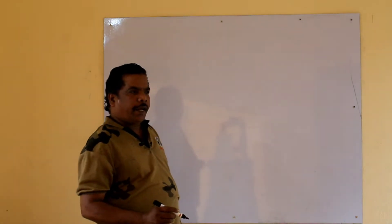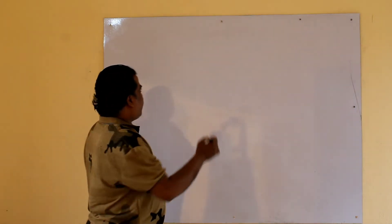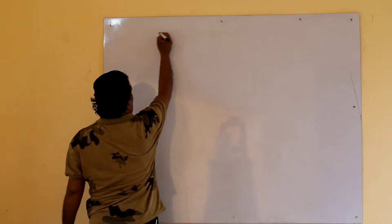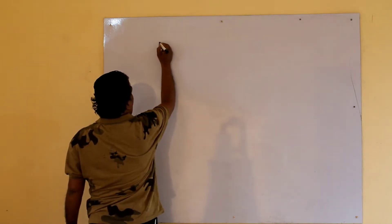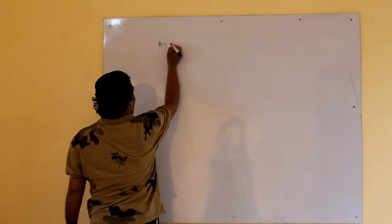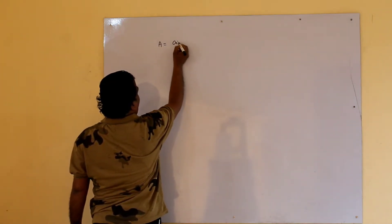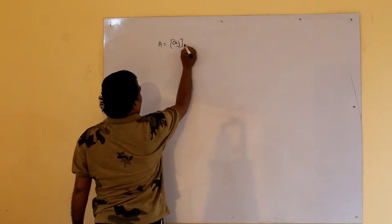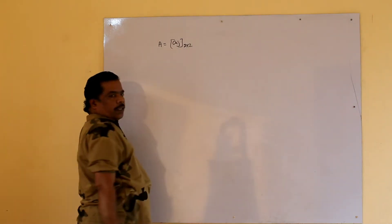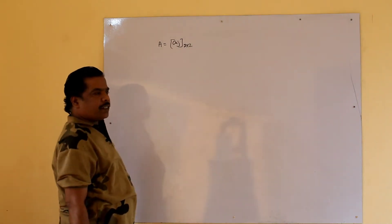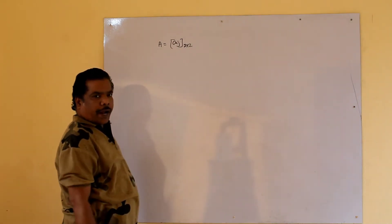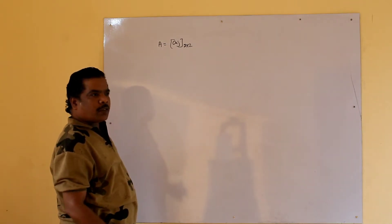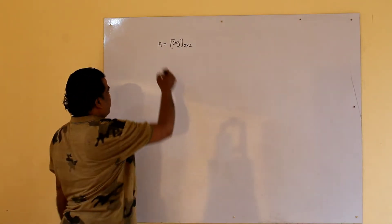Suppose A is a square matrix A_ij, a 2×2 square matrix. How do you find the minor of a square matrix?